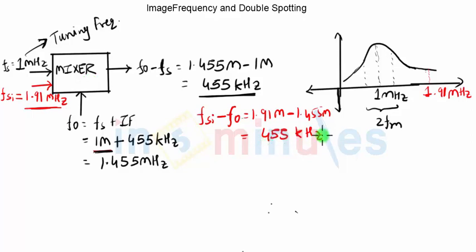Because 1.91 megahertz also generates the intermediate frequency of 455 kilohertz, the later part of the receiver after the mixer stage will not be able to differentiate between 1 megahertz and 1.91 megahertz, because both are generating the same intermediate frequency.